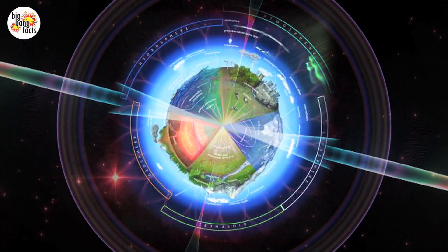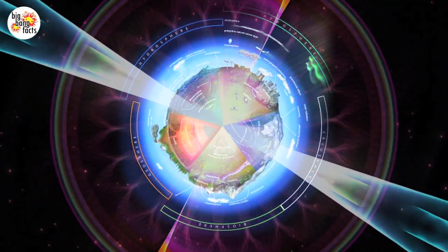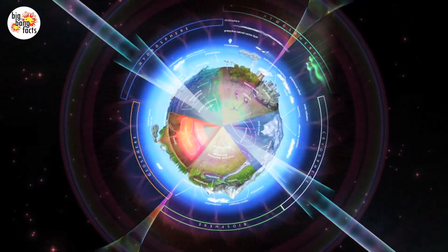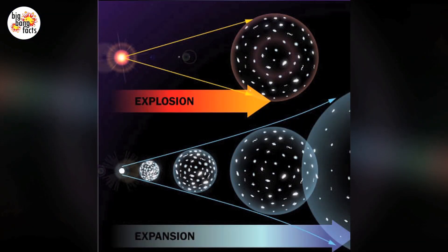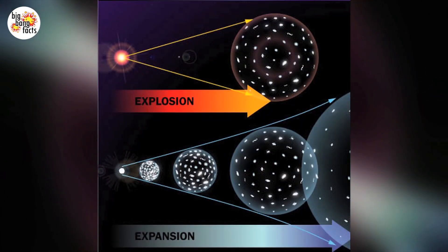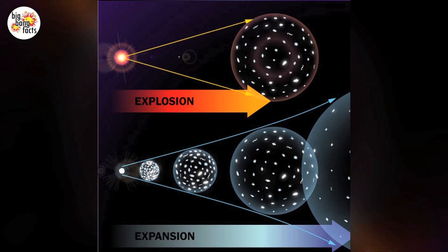As the universe expanded and cooled, energy changed into particles of matter and antimatter. These two opposite types of particles largely destroyed each other, but some matter survived.